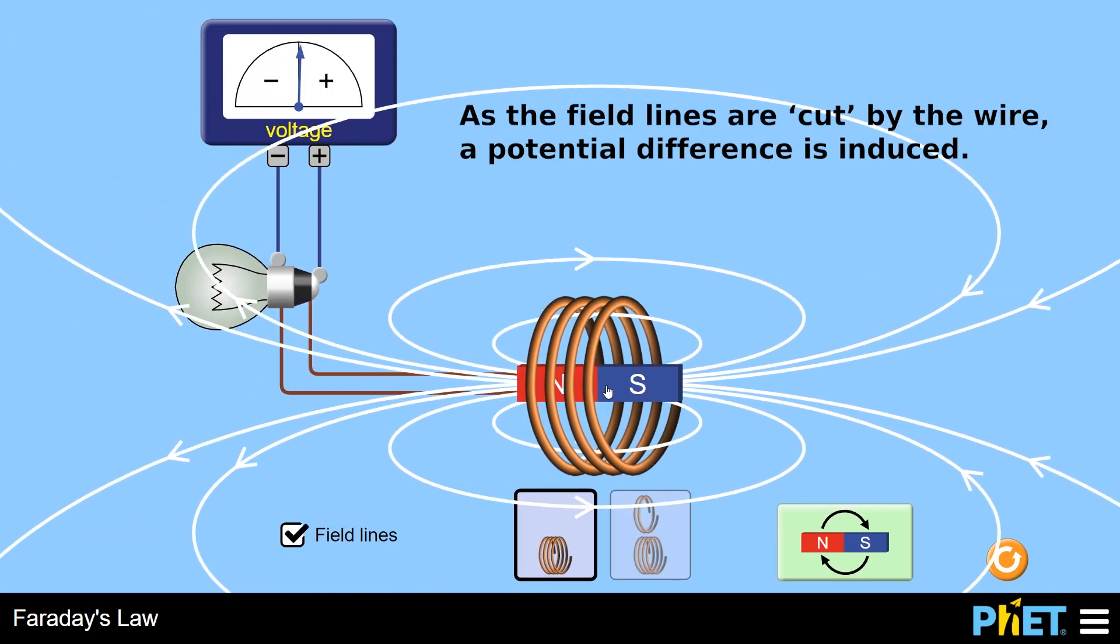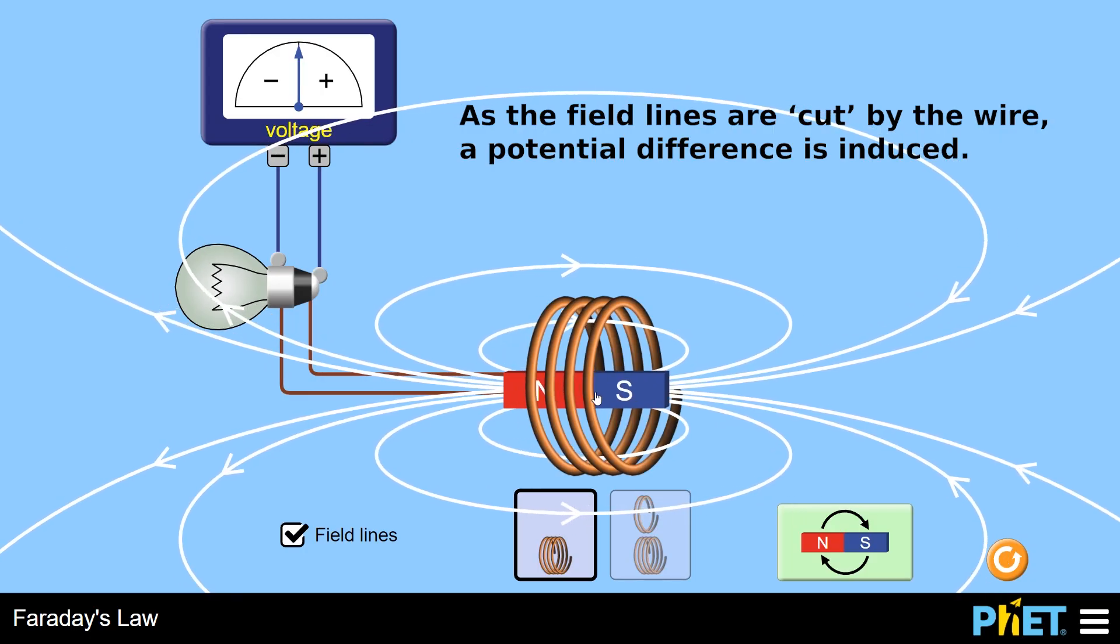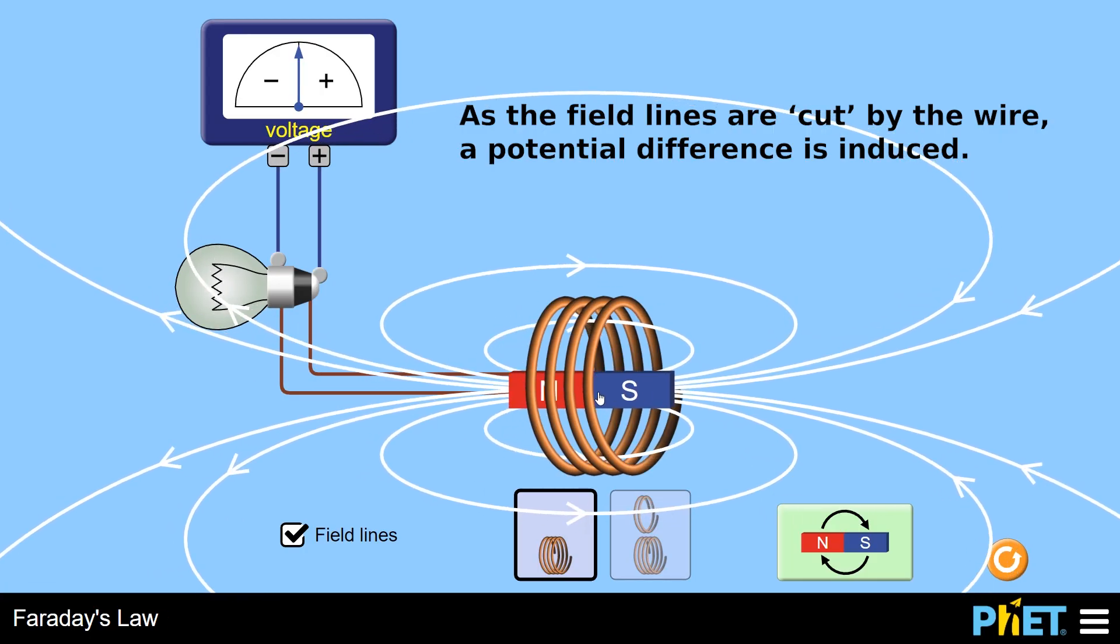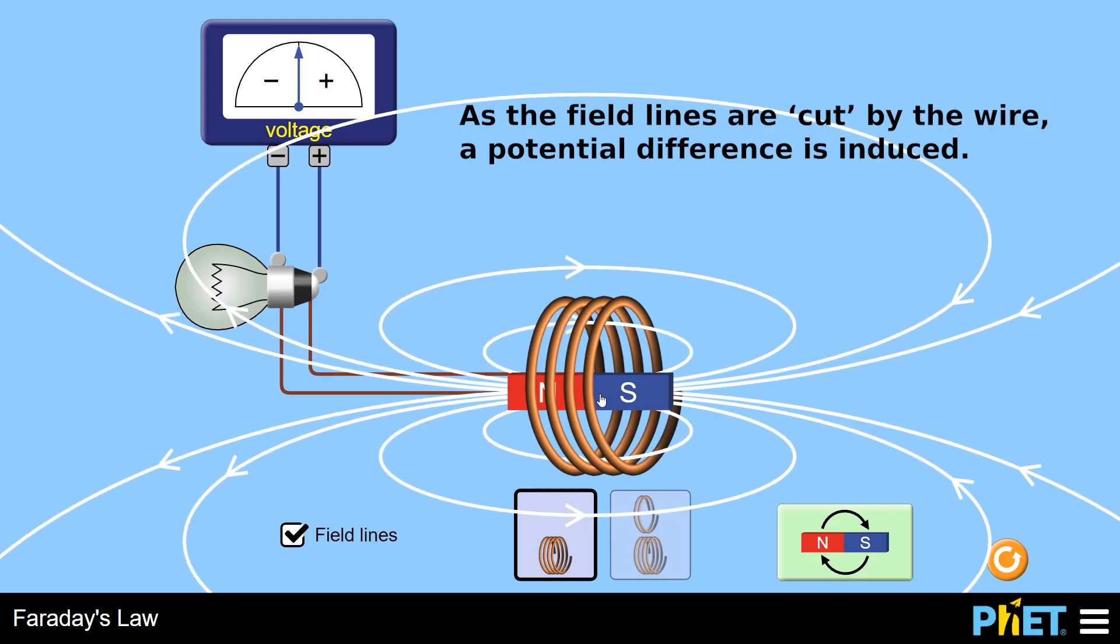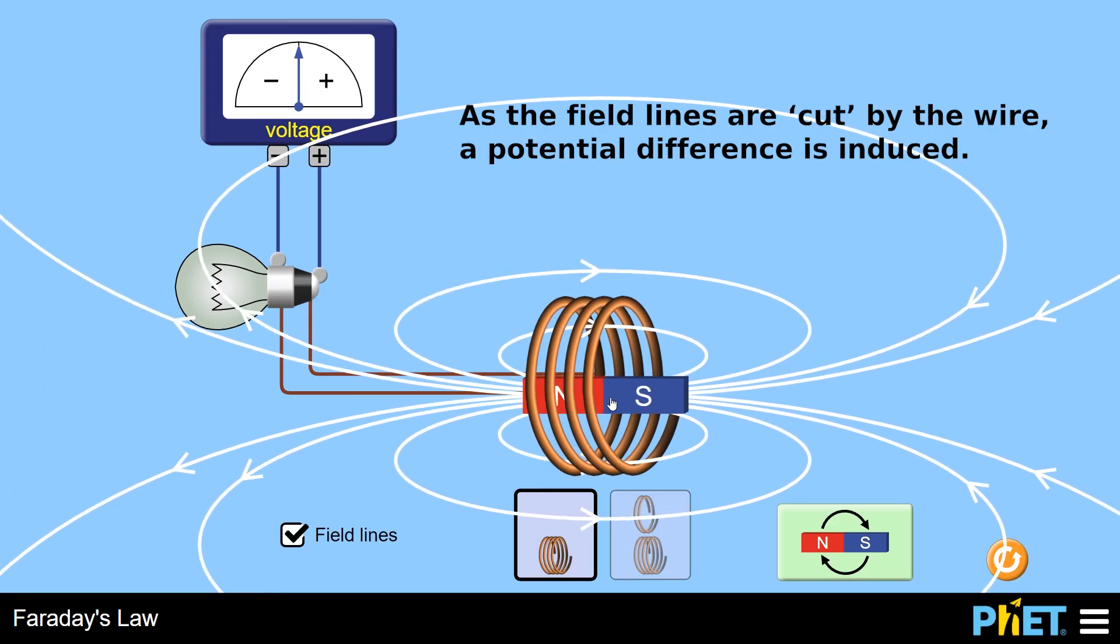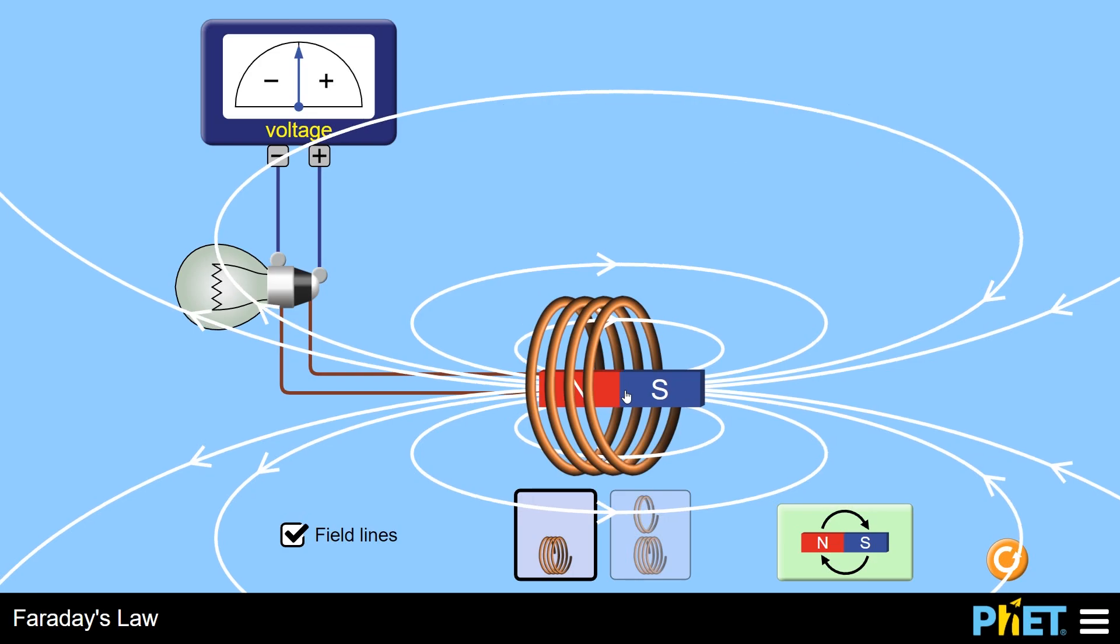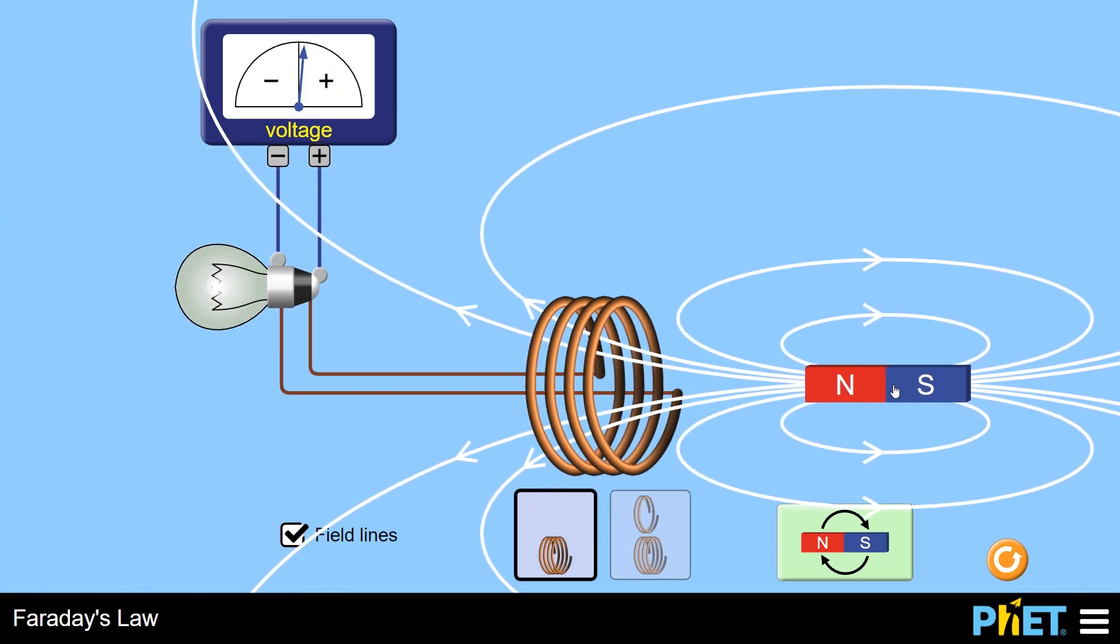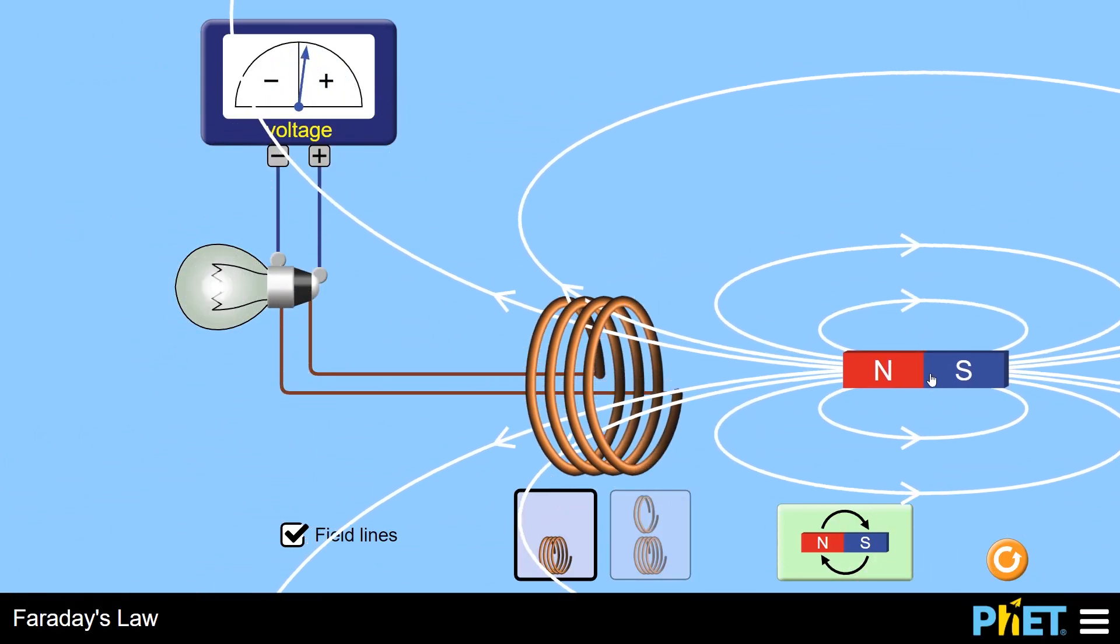Notice as well that in this position here where it isn't cutting through any field lines at all, nothing is going to happen. So the coil has to cut through the field lines in order for a voltage to be generated.